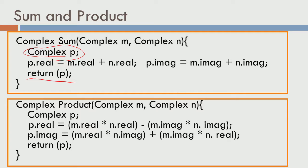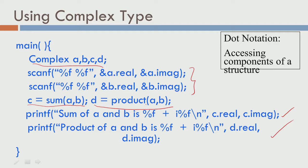Similarly for the product: the product of two complex numbers has the real part from the product of real parts minus the product of imaginary parts, and the imaginary part is the product of the real and imaginary combinations added up together. We have a local variable of type P, compute what goes into P dot real and P dot imaginary, and return P. You are returning a complex number, and the real part will get copied to D's real part and the imaginary part will get copied to D's imaginary part. This is the way to pass structure variables to functions and get back structures from functions.